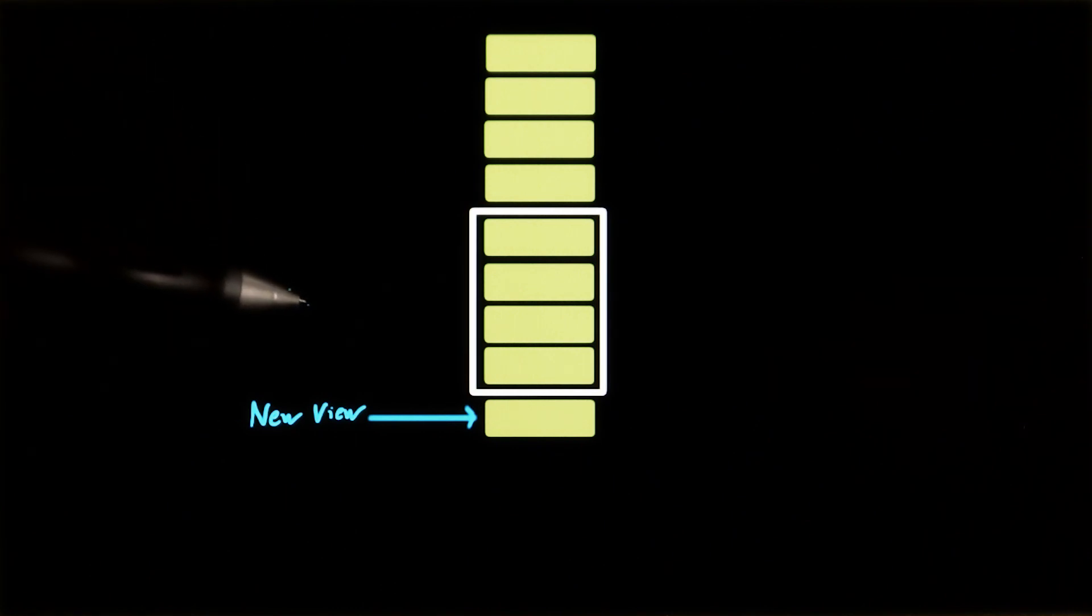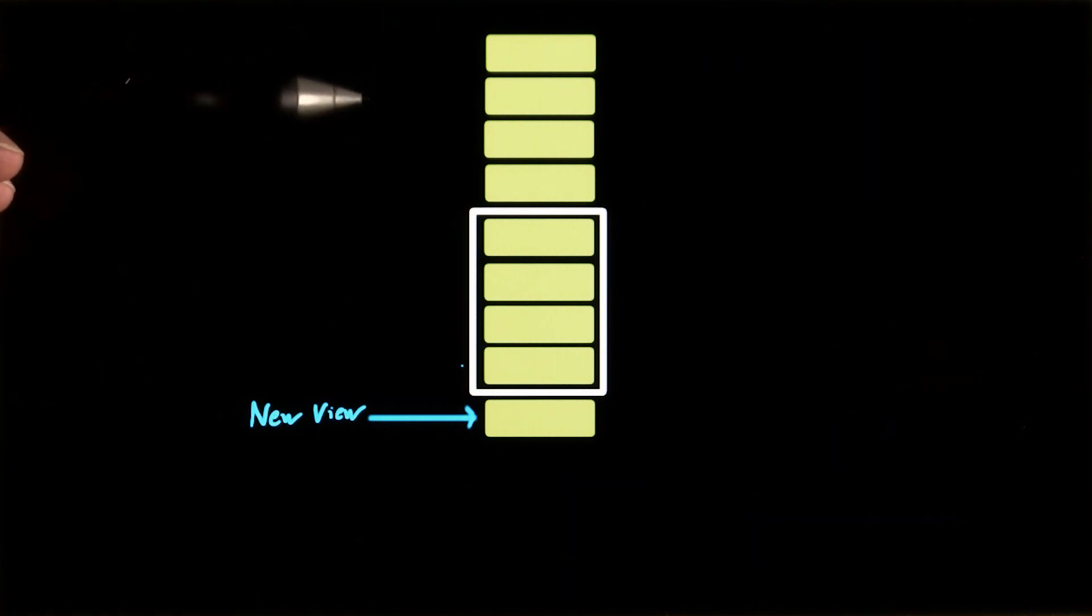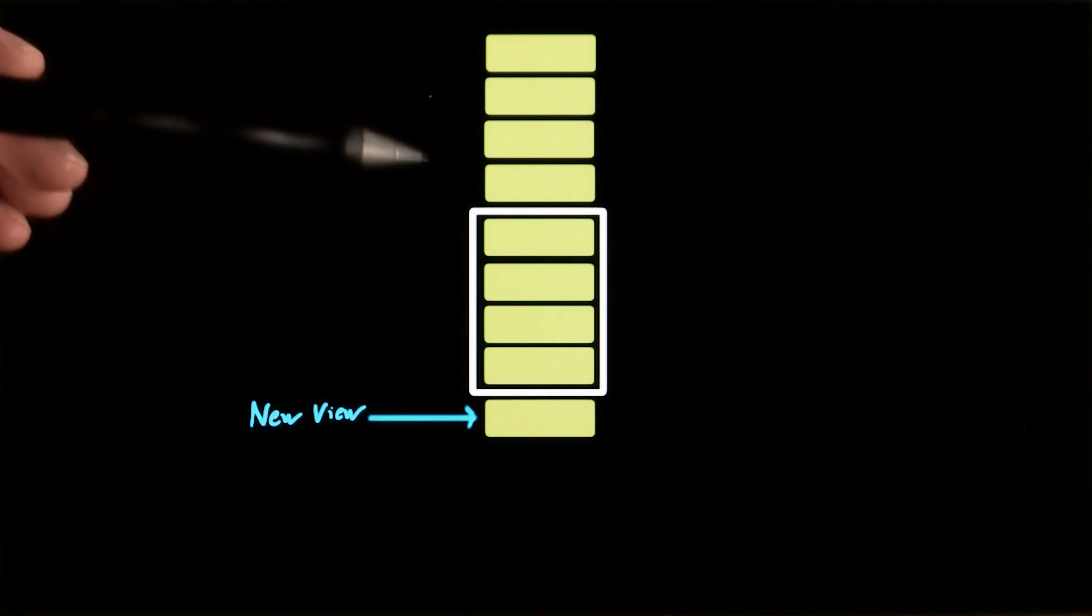But this is really just a half measure. As you can see, if the user keeps scrolling, we could potentially just keep adding new views even if they disappear off the top of the screen.